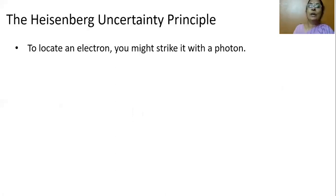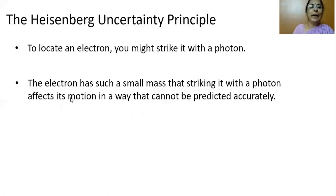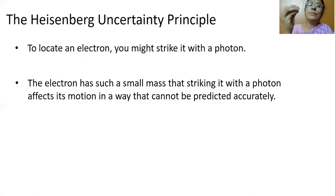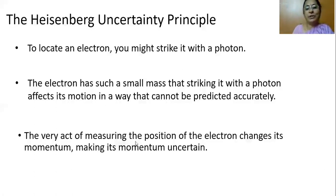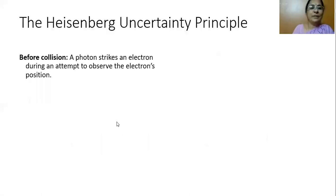To locate an electron, you need to interact with it using light — you need to strike the electron with a photon. The electron has such a small mass that striking it with a photon affects its motion in a way that cannot be predicted accurately. The light photon has energy and the electron mass is very small, so when the light photon touches the electron, it changes its position, introducing uncertainties. The very act of measuring the position of the electron changes its momentum, making its momentum uncertain.